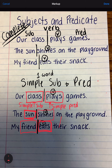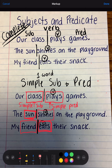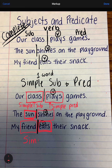So remember, if I have simple, simple means I'm picking out one word. If I have complete, it can be more than one word. And remember that we are looking for the verb, and we're drawing the line right before the verb to separate the complete subject and complete predicate. I hope this video helped you out. Thanks for watching.